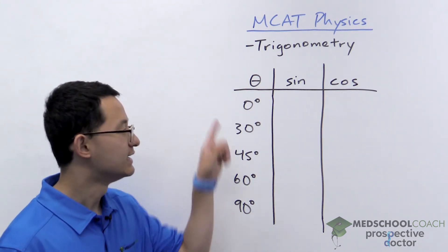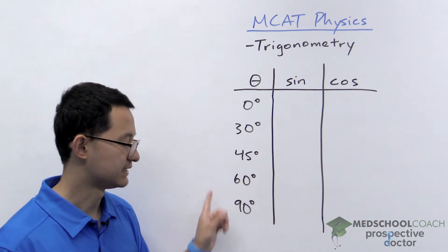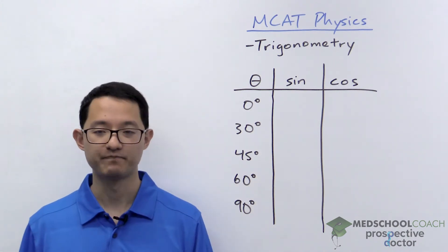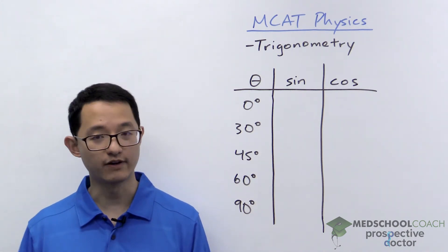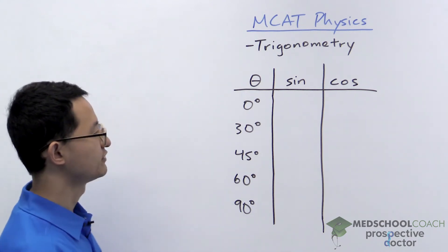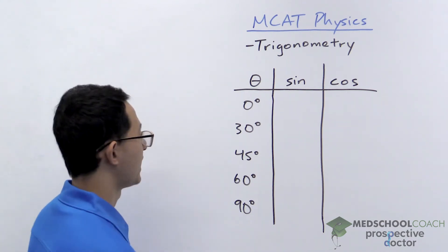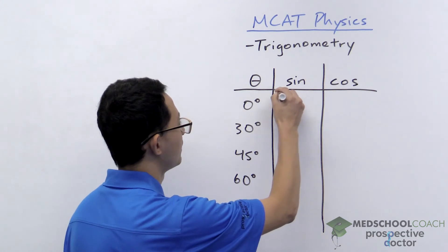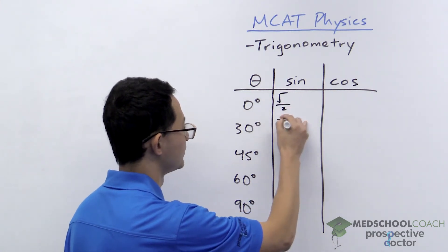Really, you're going to be seeing 0, 30, 45, 60, and 90. All right. So how does this work? Well, the first thing you're going to do is you're going to do some brief setup. For every single term, you're going to have a square root of something over 2.